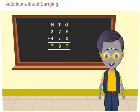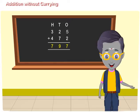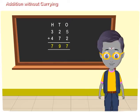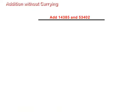Addition without carrying. We know the method of addition of two or three four-digit numbers without carrying. In the same way, we add numbers of five digits. Let us add 14,385 and 53,402.